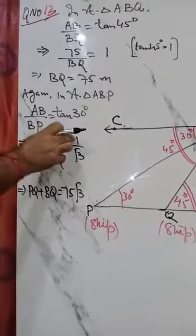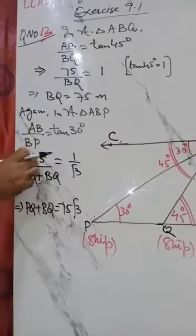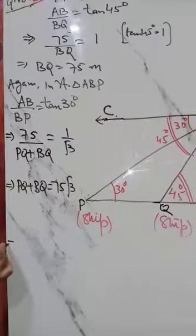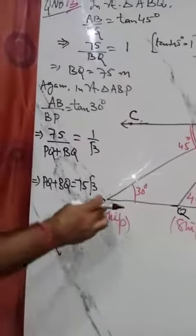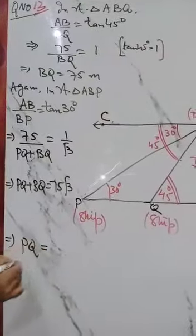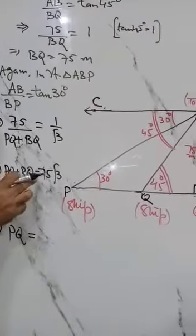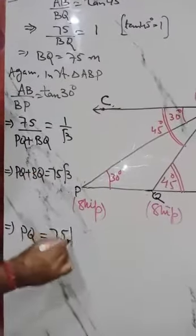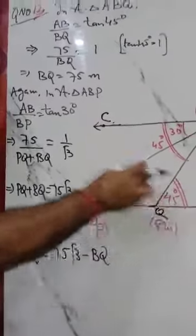Next step, BQ which we have to find, distance between 2 ships, PQ is equal to 75 root 3 minus BQ. BQ value is 75.